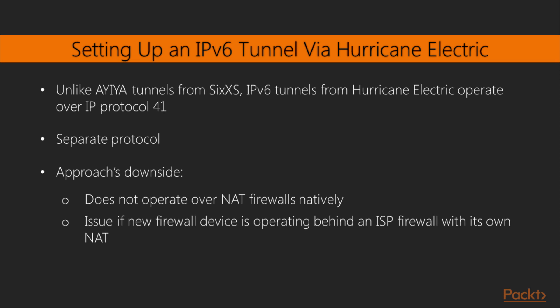Unlike Aya tunnels from 6XS, IPv6 tunnels from Hurricane Electric operate over IP protocol 41, which is defined by the IPv6 encapsulation protocol. This is a separate protocol from ICMP, TCP, and UDP. The downside of this approach is that it does not operate over NAT firewalls natively. This may be an issue if your firewall device is operating behind an ISP firewall with its own NAT. The ability to forward protocol 41 traffic to a machine behind the NAT is device-specific and does not work on all firewalls.